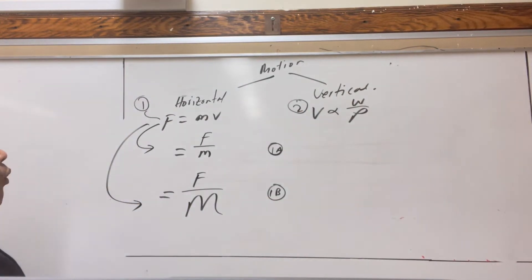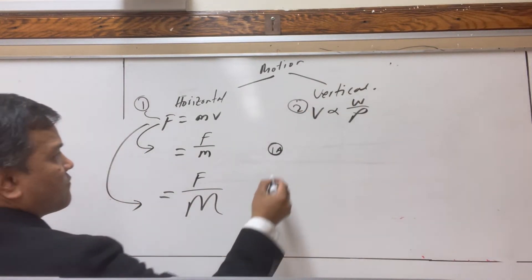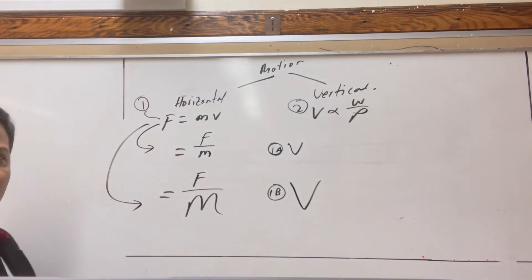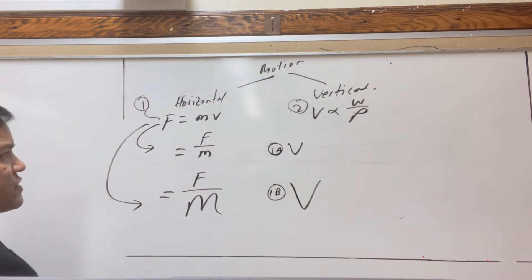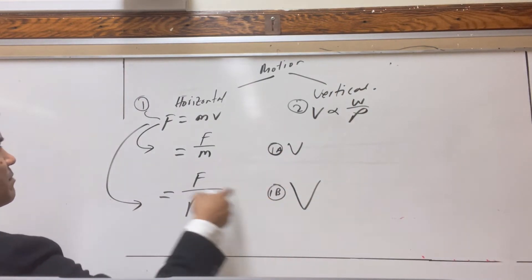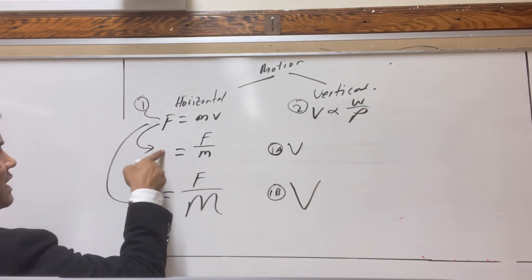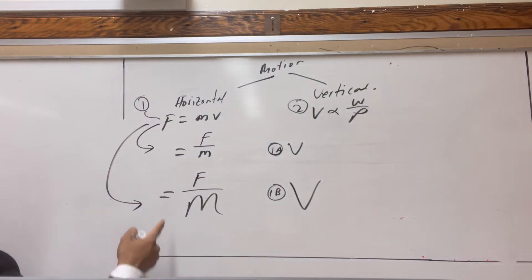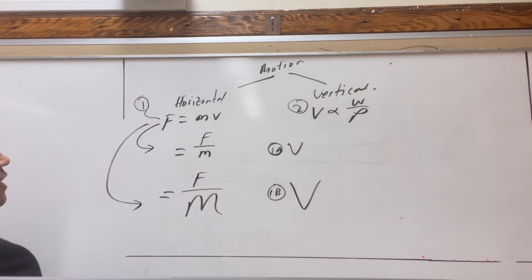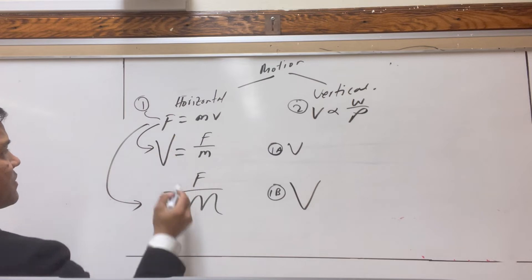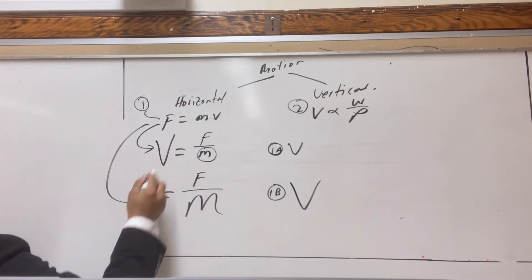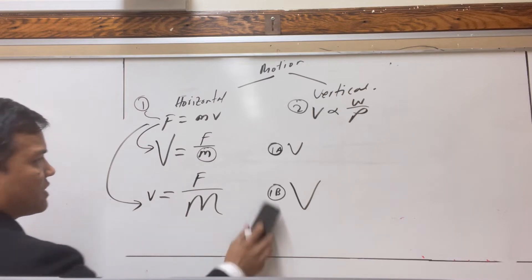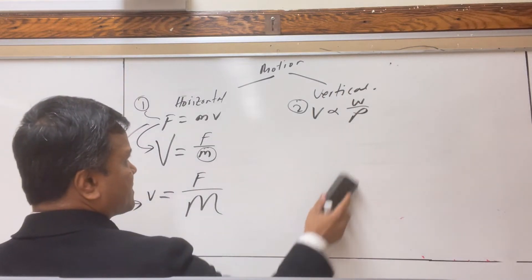Which one belongs to which? Of course, when you have a small mass, you have a big velocity, and when you have a big mass, you have a small velocity — according to Aristotle.